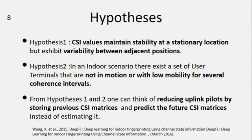The intuition behind our proposal is based on two hypotheses. The first hypothesis says that CSI values maintain stability at stationary locations but exhibit variability between adjacent positions. This means that a stationary user will have the same CSI. Hypothesis 2: In an indoor scenario, there exists a set of user terminals that are not in motion or with low mobility for several coherence intervals, which is normal in every indoor scenario. From these hypotheses, one can think of reducing the uplink pilot by storing previous CSI matrices and predicting the future CSI matrices instead of estimating them.